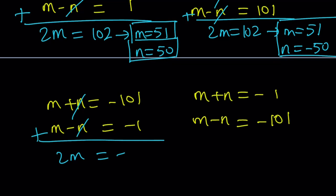So now, in this equation or in this system, we're going to do the exact same thing. 2m equals negative 102. m equals negative 51. And if you plug in negative 51, n needs to be negative 50. So those are going to be the m and n values.